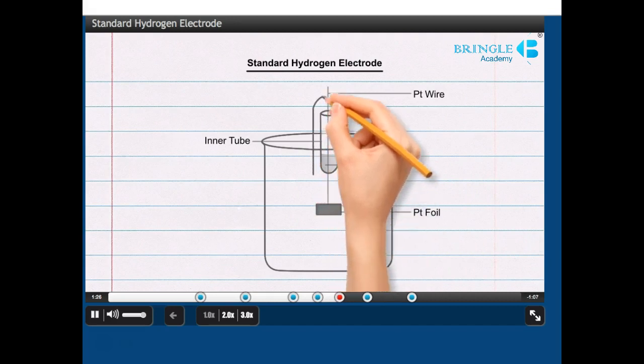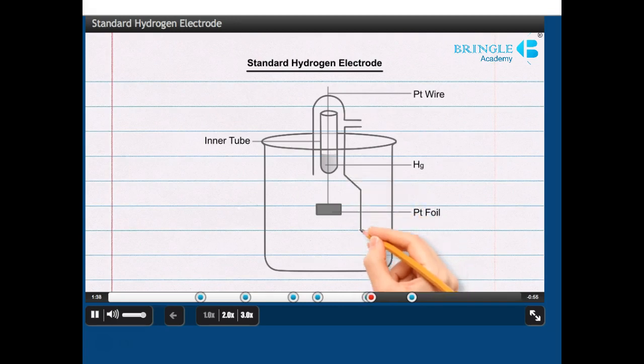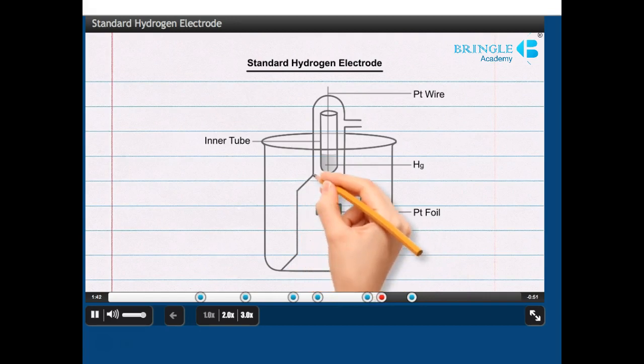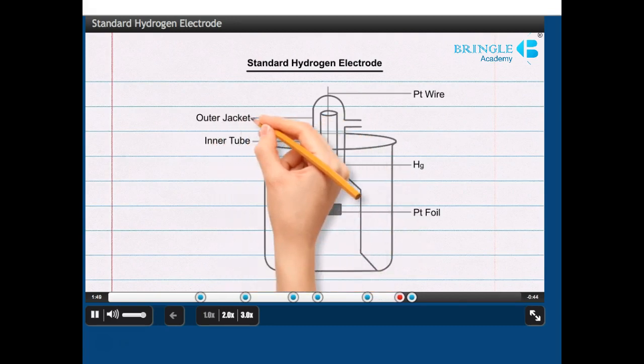Draw a rectangular-shaped structure which is curved on top and open at the bottom, with a side tube attached to its top right side, engulfing the inner tube. Attached to the open bottom side of the rectangular-shaped structure, draw a vertical dome-shaped structure which touches the base of the beaker. Mark the structure as outer jacket.